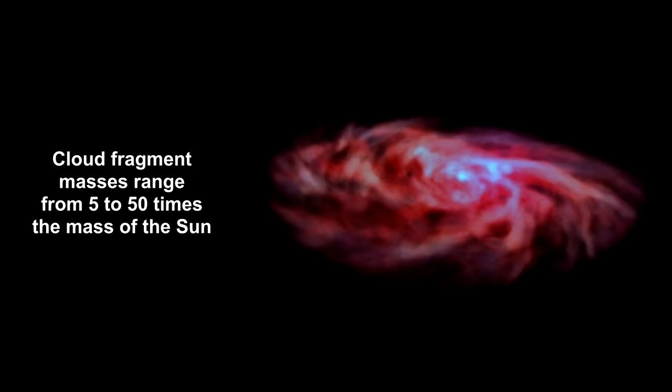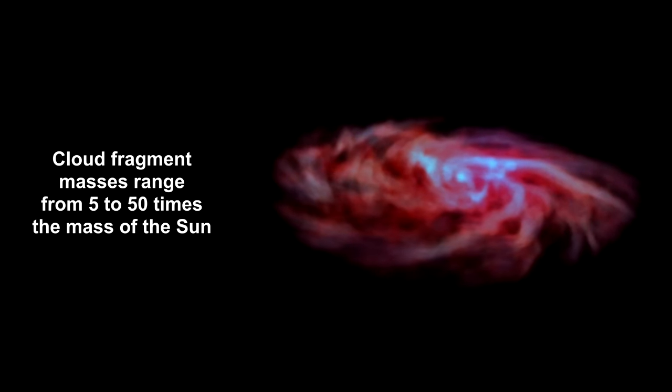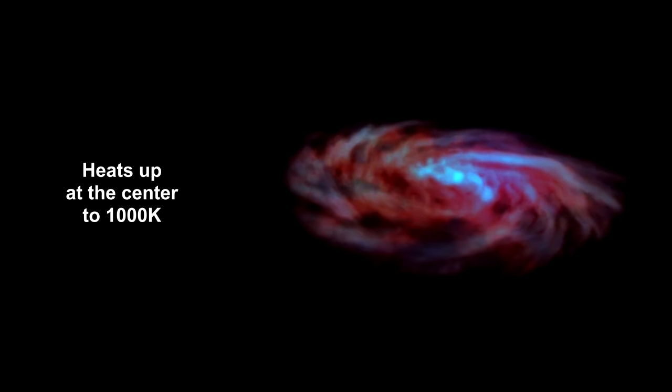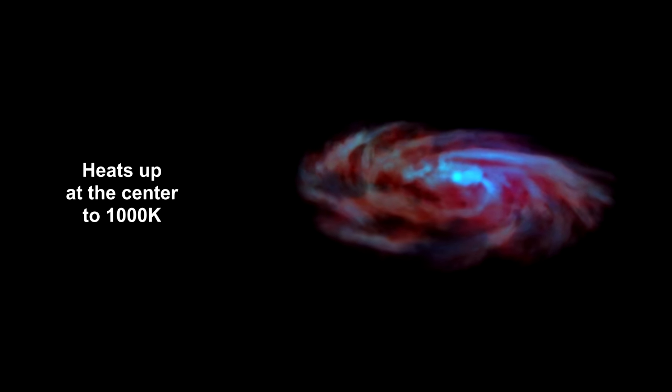At first, the protostar has about 1% of its final mass. But the star continues to grow as infalling material is accreted. Densities and temperatures rise dramatically.